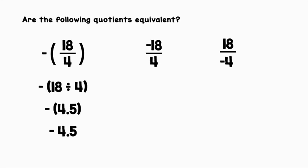Let's move on to the second expression. We can rewrite negative 18 over 4 as negative 18 divided by 4. Since we have one negative number and one positive number, our quotient is going to be negative: negative 4.5. So these two are equivalent.